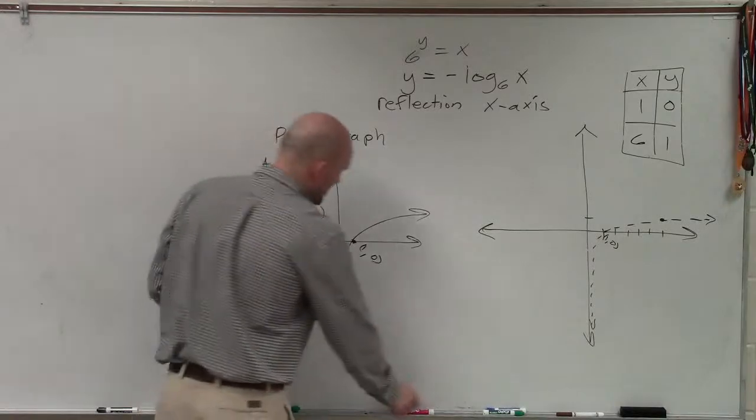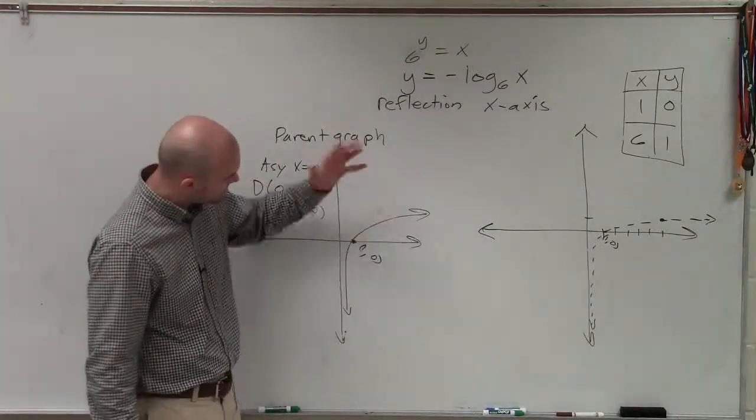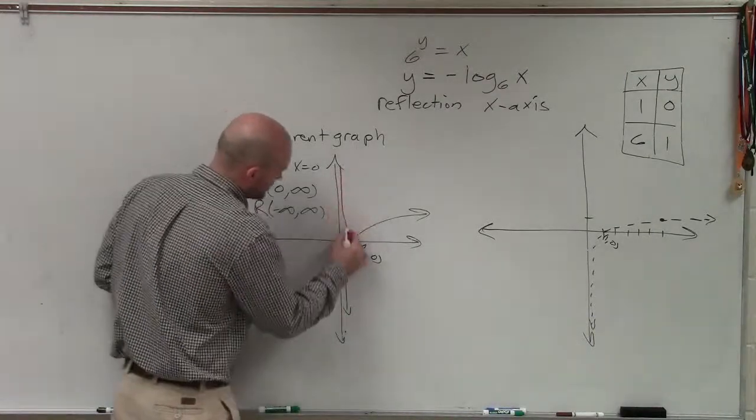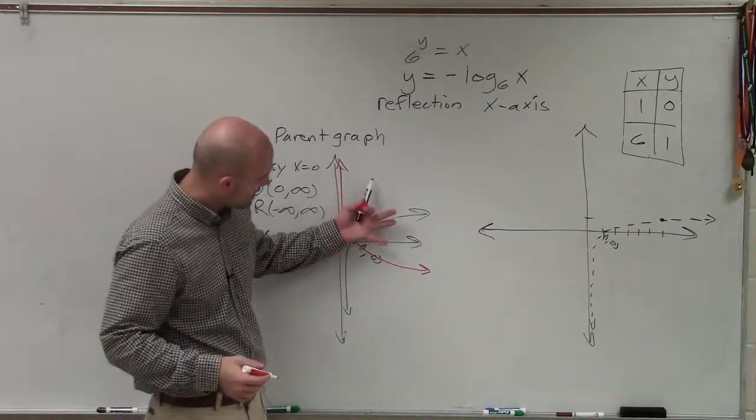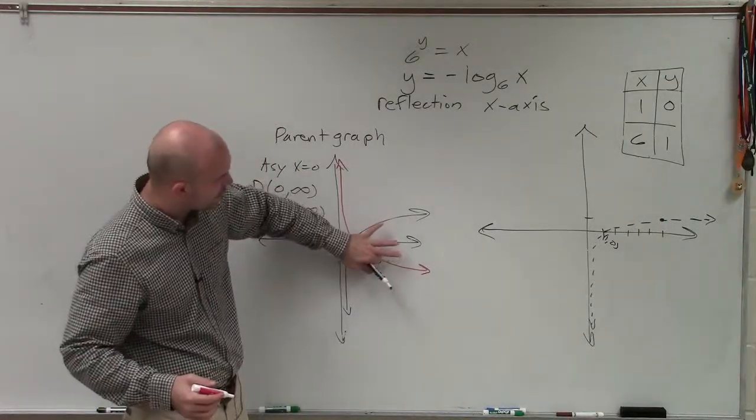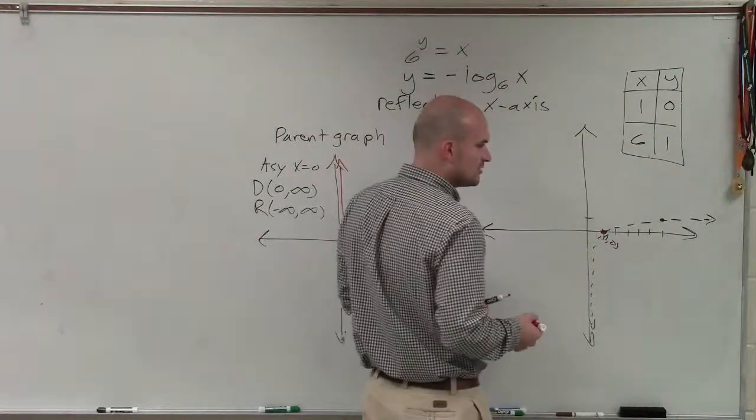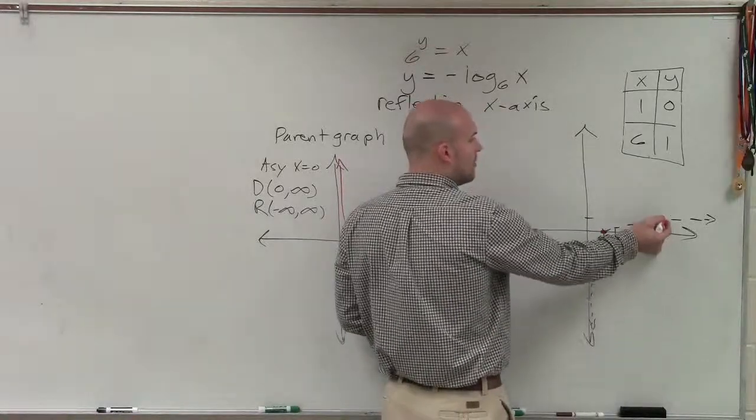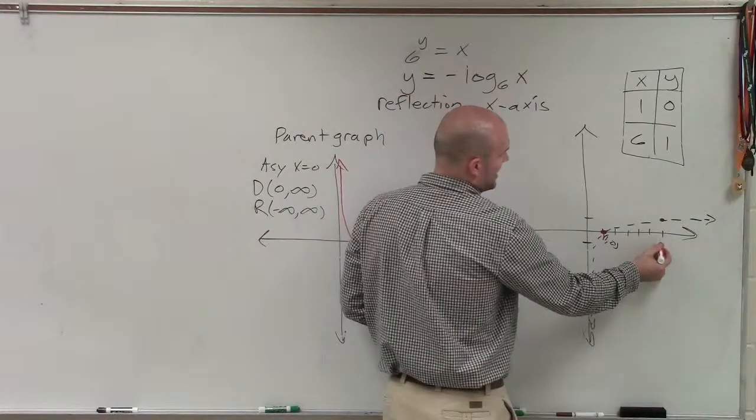But now what we're going to do is we're going to apply the reflection. So ladies and gentlemen, if we're going to take this reflection, what we're going to do is we're going to reflect it over the x-axis. So if you look at a general reflection over the x-axis, it's going to look something like that. You're taking your graph and you're reflecting it over the x-axis. So my coordinate point at 1 comma 0 is still going to remain the same. But now my point 6 comma positive 1 is now going to turn over 6 comma negative 1.